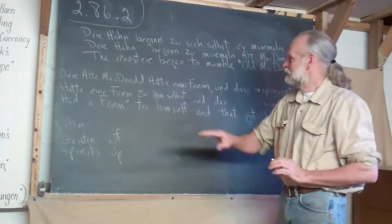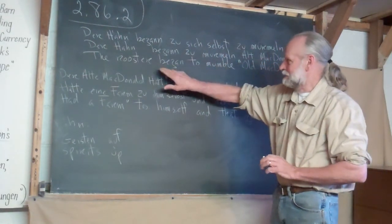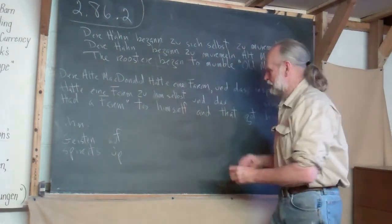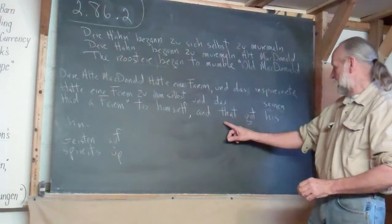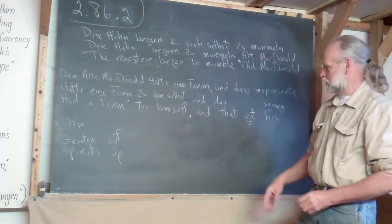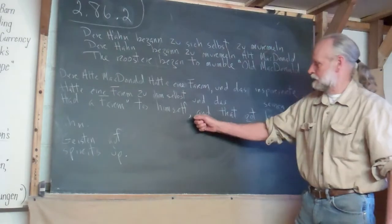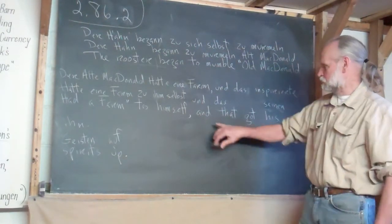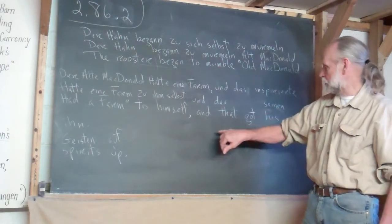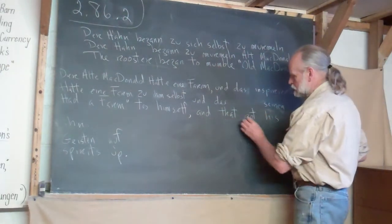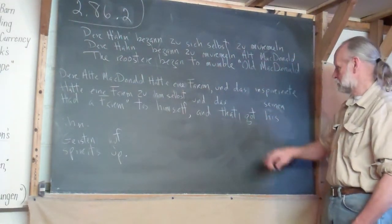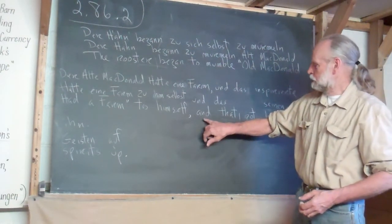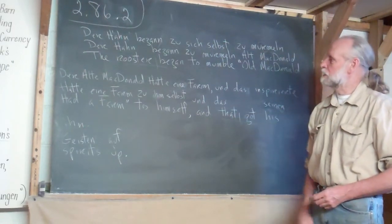That's one clause. Rooster began. It's got a subject and a predicate. And, that got his spirits up. Well, that's the second clause. We needed the comma, because now this is a compound sentence, joined by a coordinating conjunction. That got, there's our subject, simple subject, there's our simple predicate. So, we've got a compound sentence here. Joined by a coordinating conjunction, and a comma is enough here.